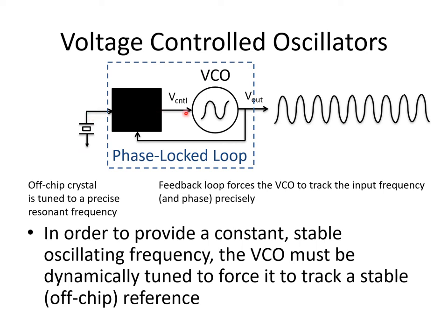In practice, a feedback loop is created so that the output of the VCO is observed and forced to match the frequency and, in some cases, the phase of oscillations determined by an off-chip crystal. The resulting feedback loop is called a phase-locked loop. In a phase-locked loop, if process, voltage, or temperature variations cause the VCO output phase or frequency to shift, V-control is dynamically readjusted to restore the desired oscillating frequency and phase.